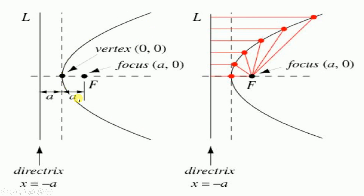Looking at this diagram: the black curve is the parabola, the focus is at (a, 0), the vertex is at (0, 0), and the distance from vertex to focus is a. Dropping a perpendicular of the same distance to the principal axis gives the directrix, whose equation is x = −a.